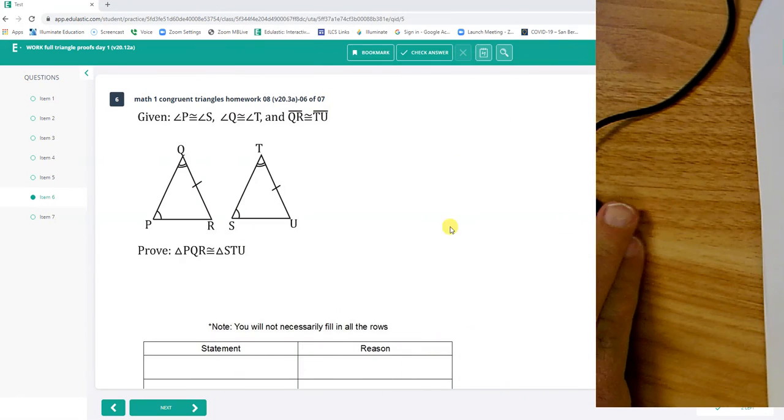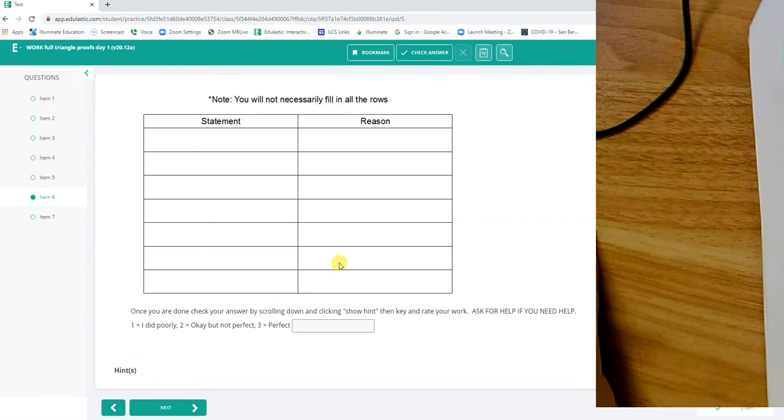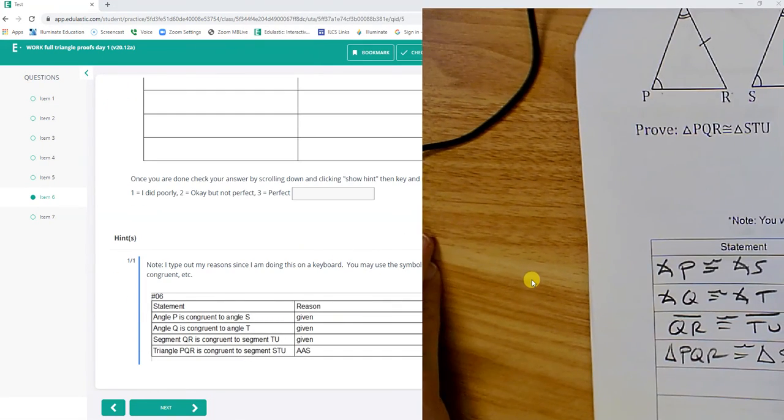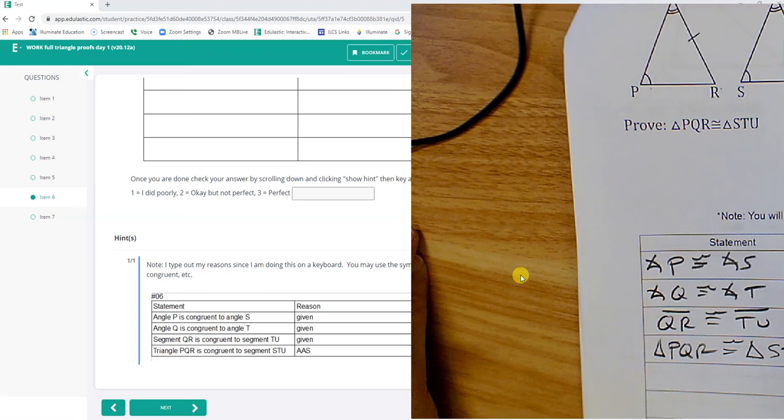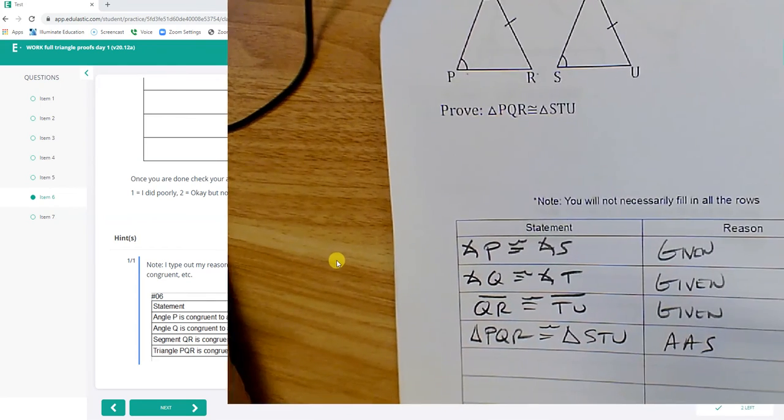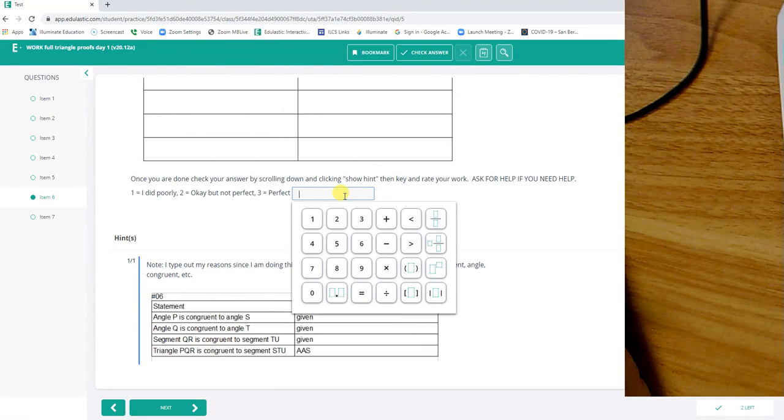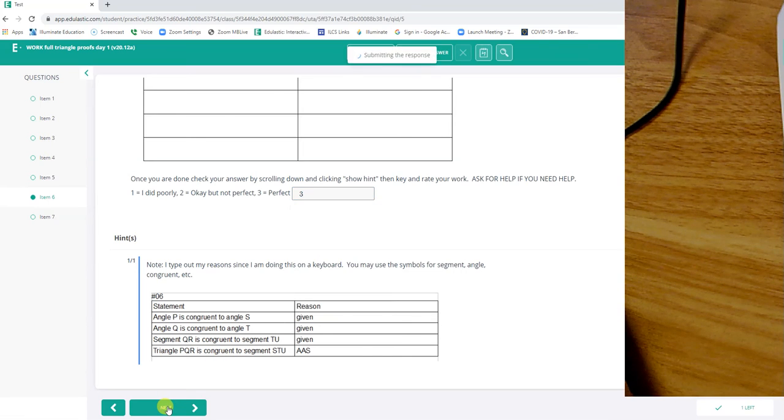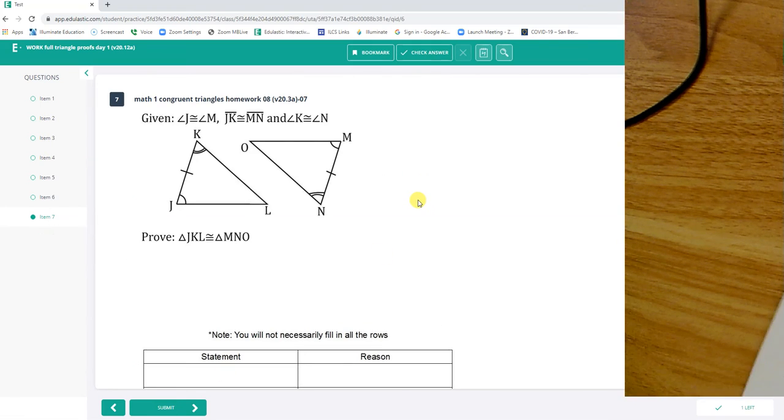Let's check it. P to S, Q to T, QR, TU, PQR, STU, AAS, given, given, given. Segment looks good. And question number seven.